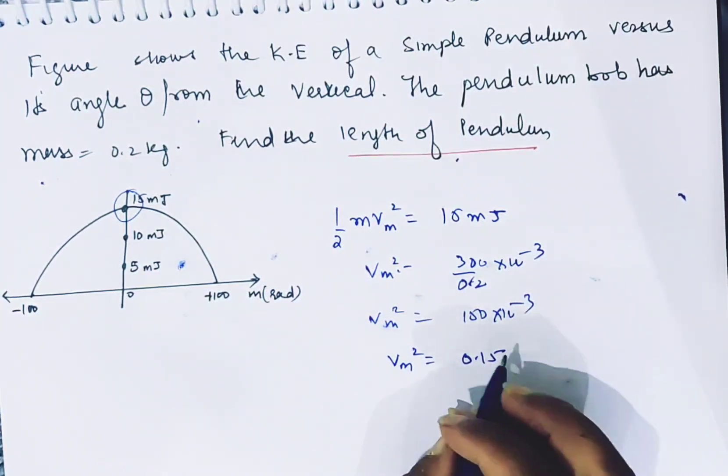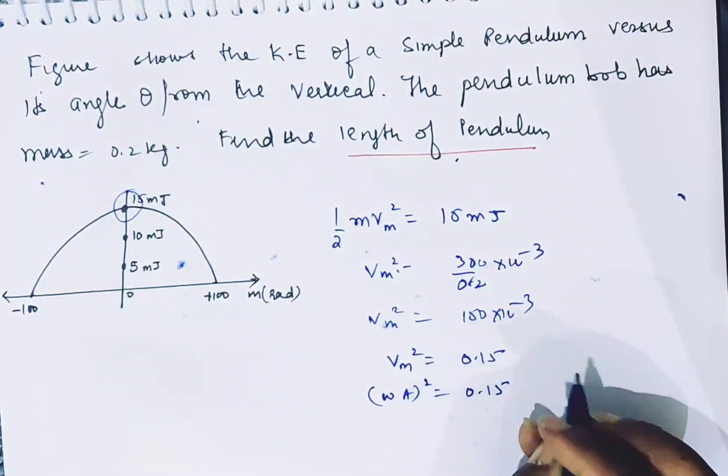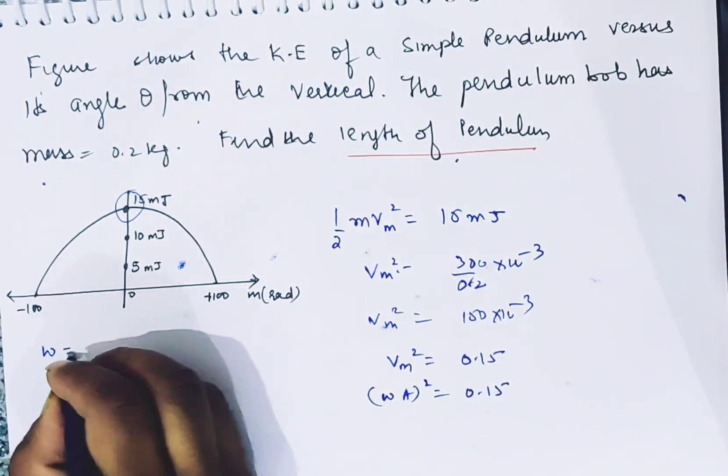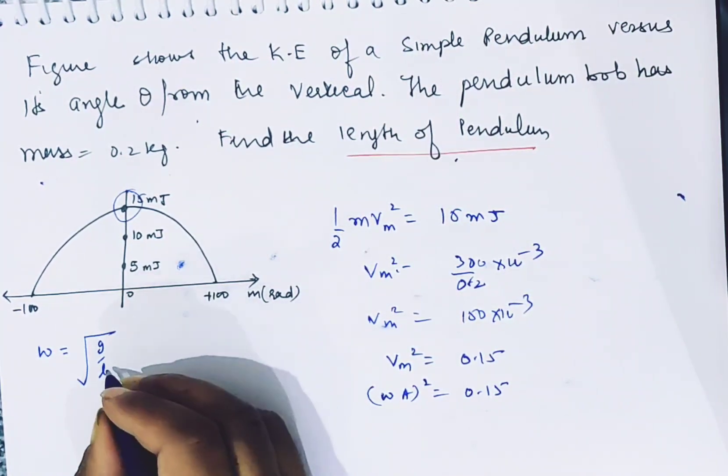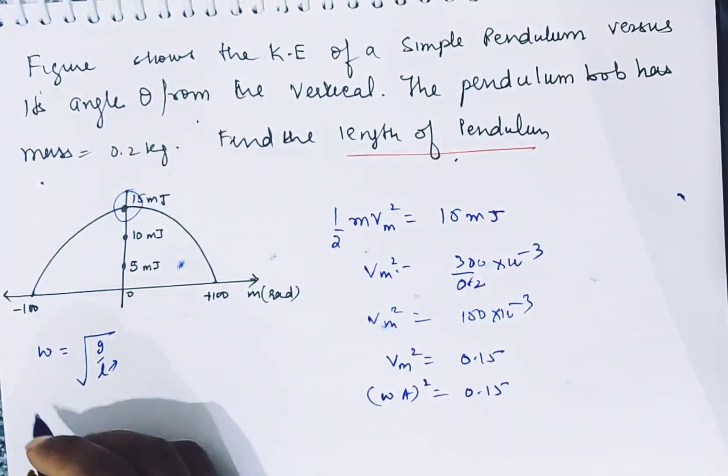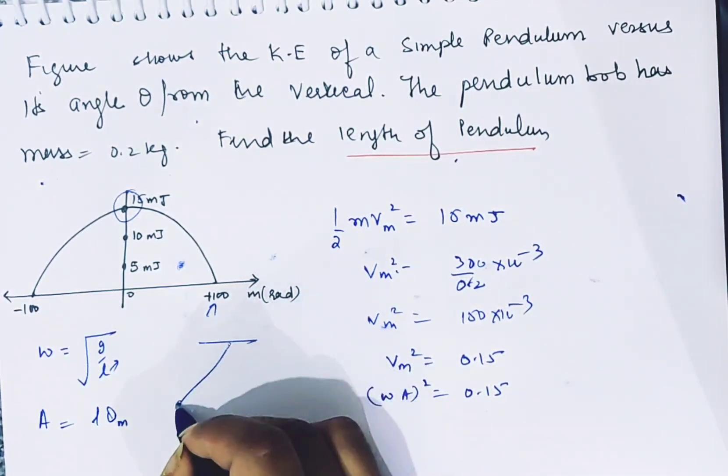vm squared which we can replace is omega a squared, equals 0.15. Now what is omega? It is g by l. And what is a? It is l theta maximum. This is the pendulum.